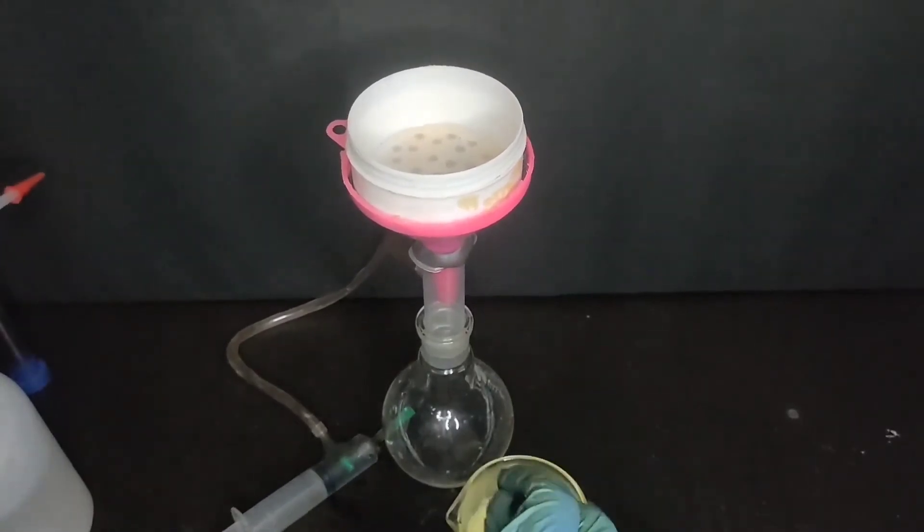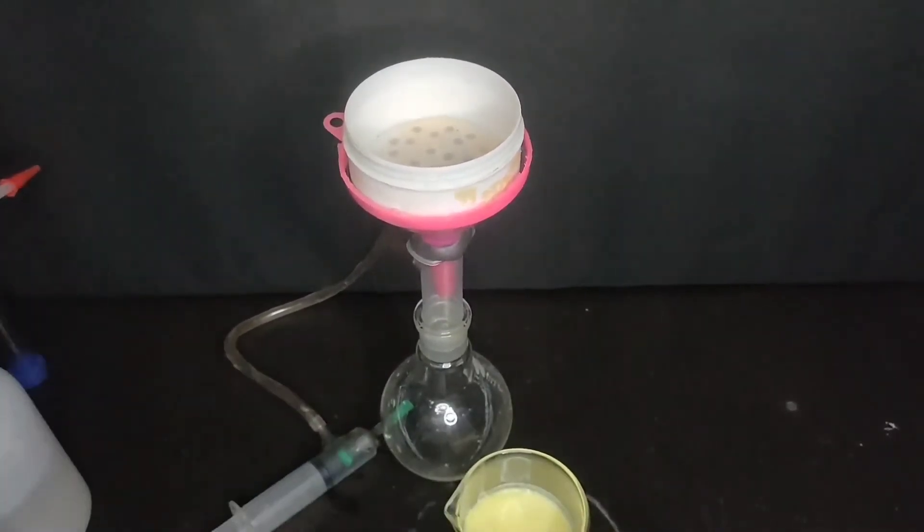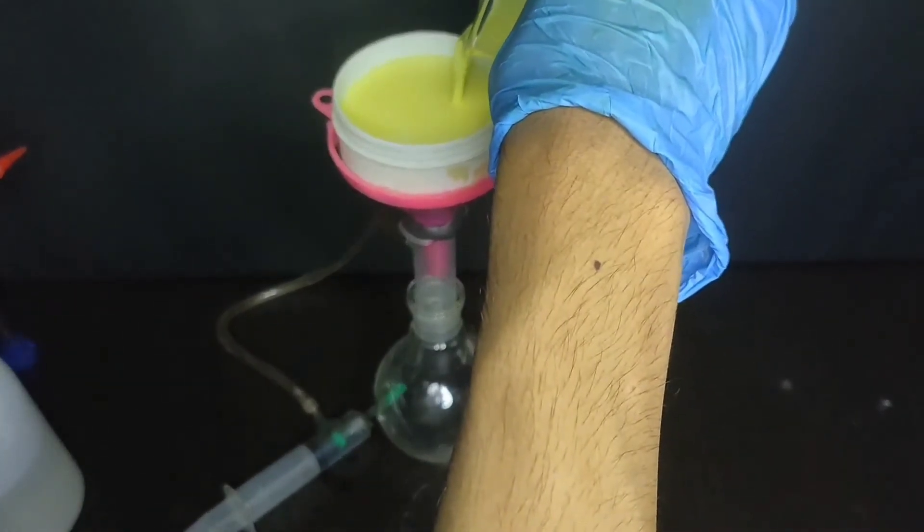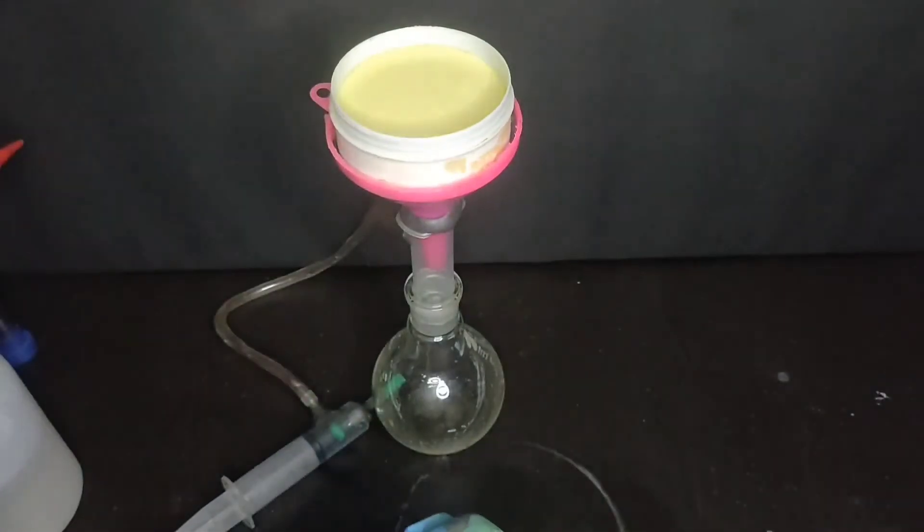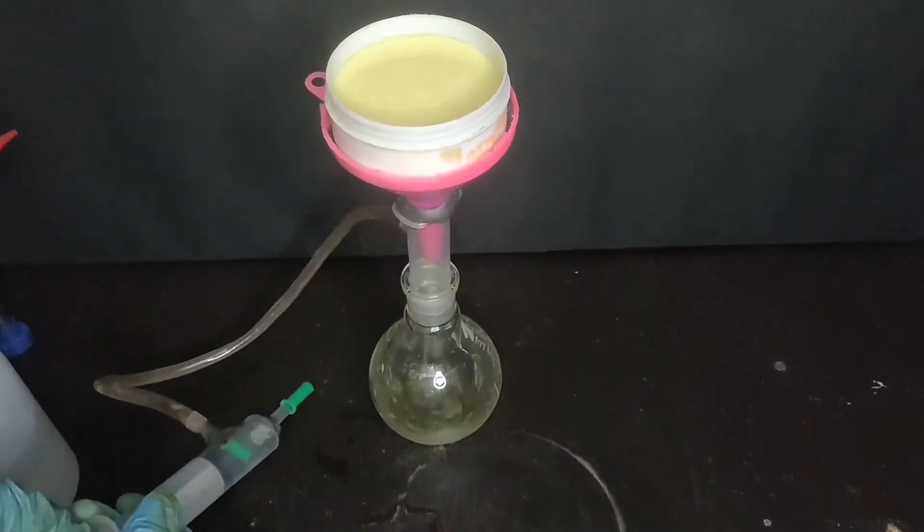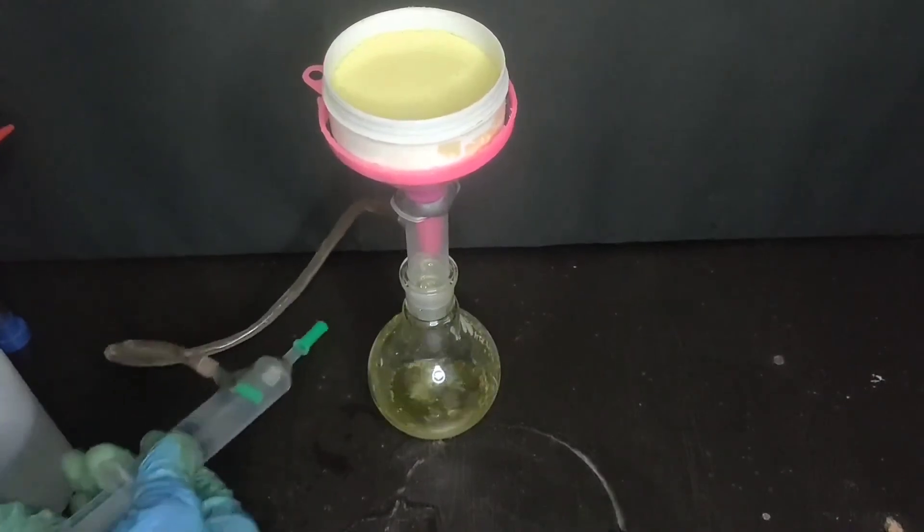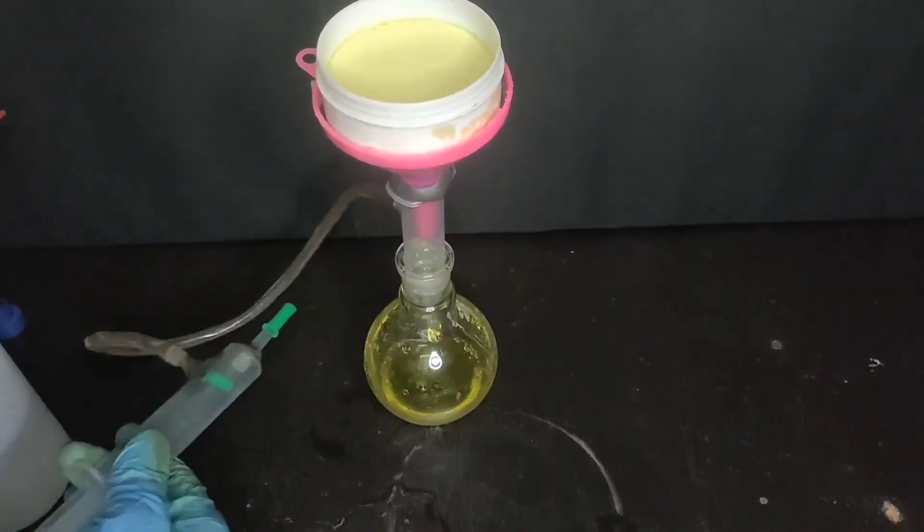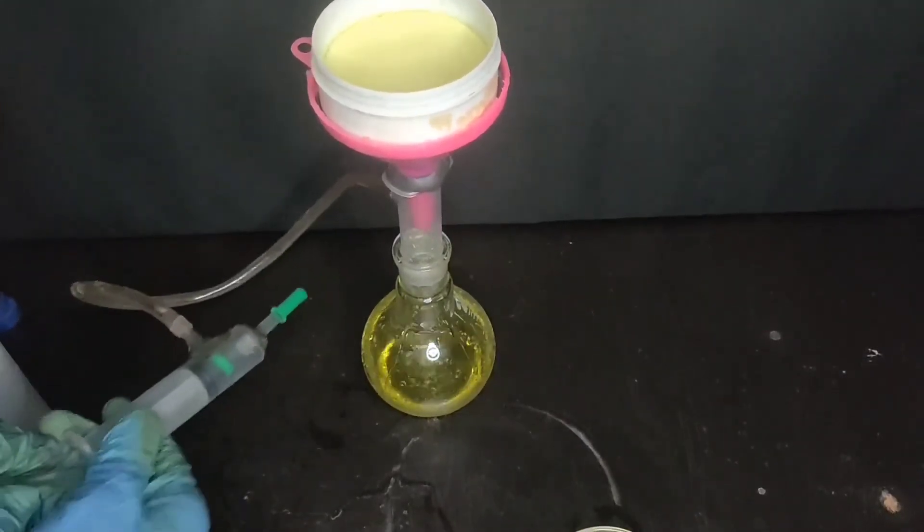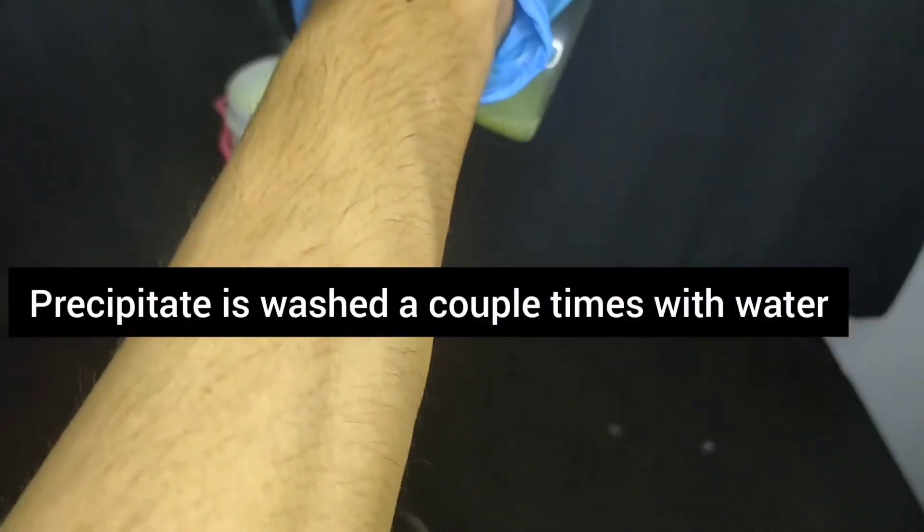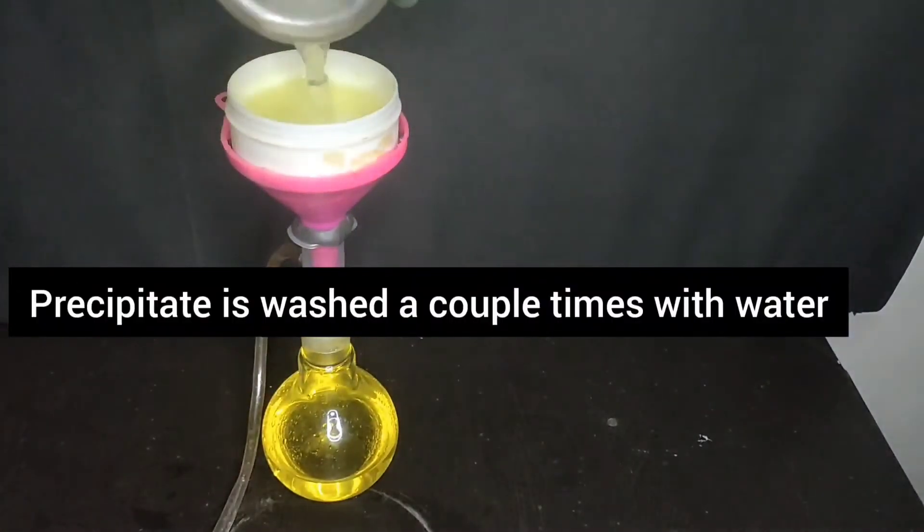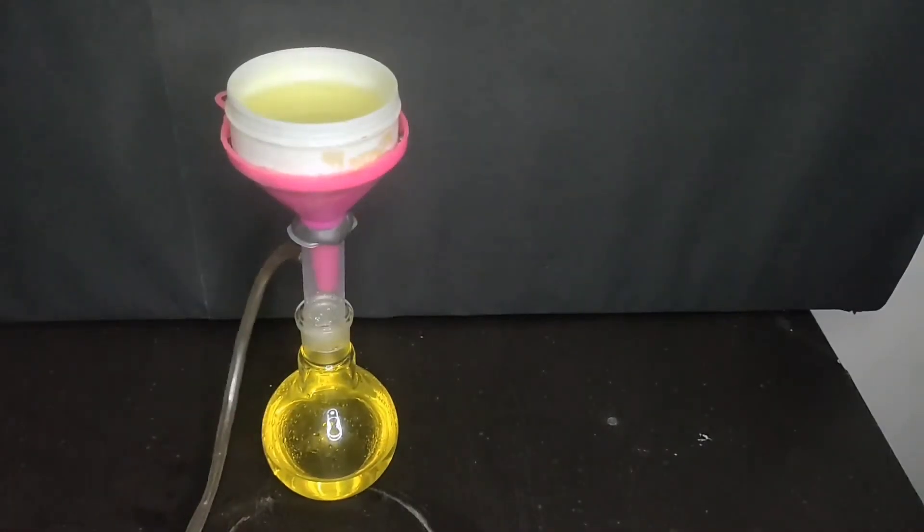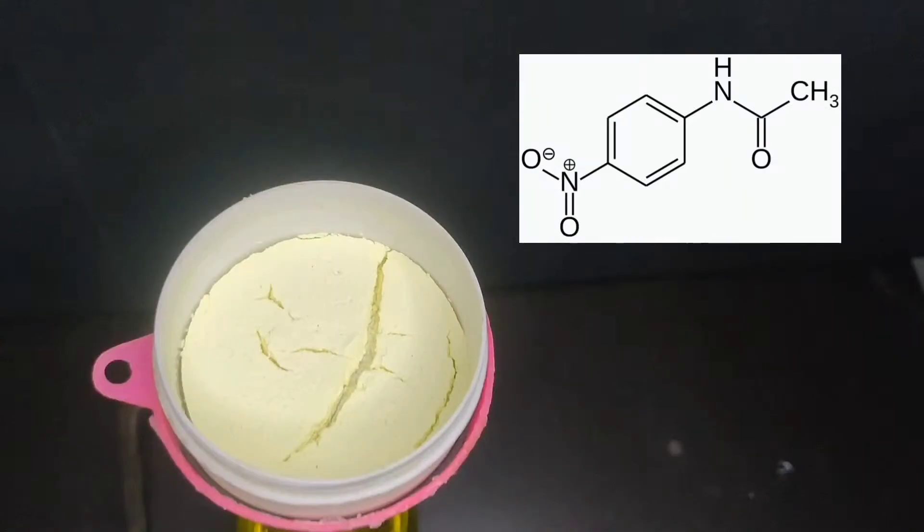The precipitate is then filtered using vacuum filtration through my DIY Buchner funnel. The precipitate is washed a couple of times with distilled water. This is the para-nitro acetanilide.